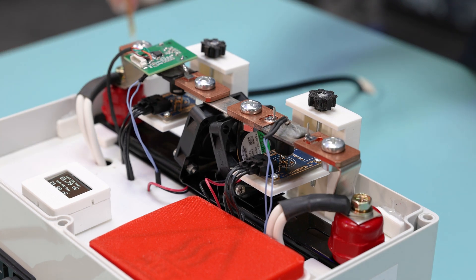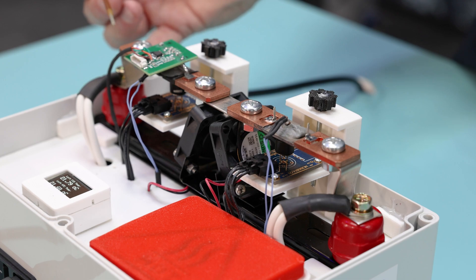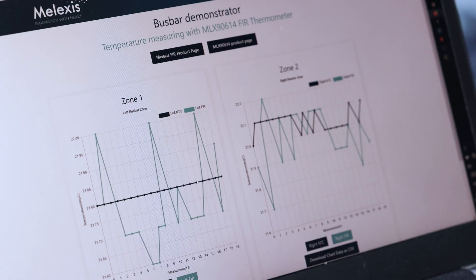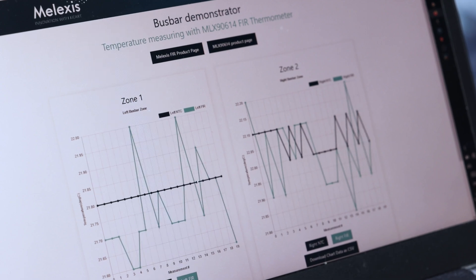We force a significant current through the Busbar, about 100 amperes, and we can measure it using our IVT MLX 91-230 current sensor.